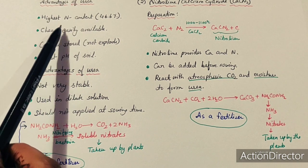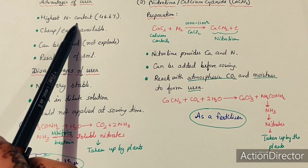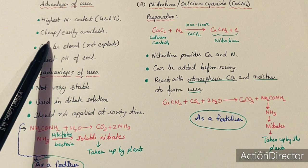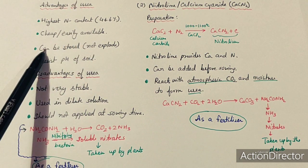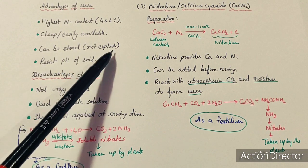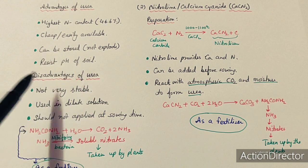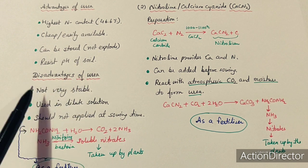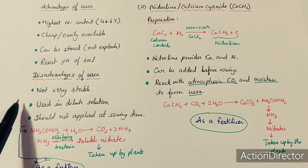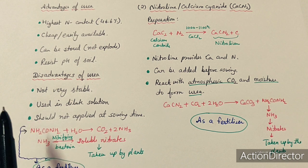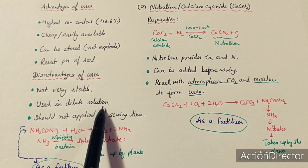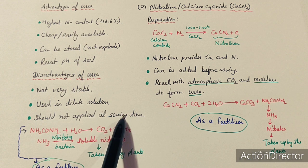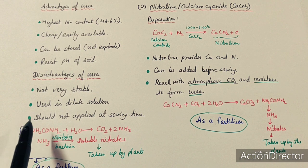Advantages of urea: it has the highest nitrogen content — about 46.6%. It is cheap, easily available, and water-soluble. It can be easily stored because it does not explode, and it helps maintain the pH of the soil. Disadvantages: it is not very stable, must be used in dilute solution — requiring a lot of water after application — and cannot be applied at sowing time; it is applied after crops have already grown.